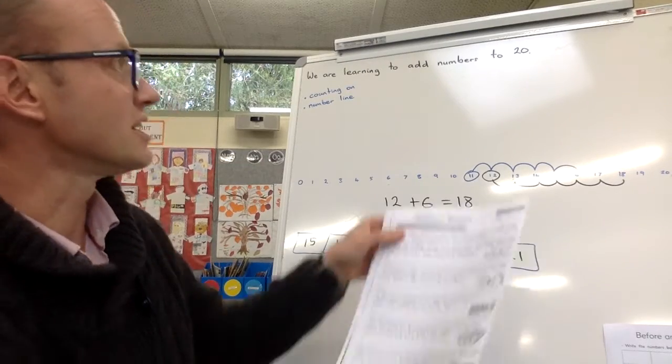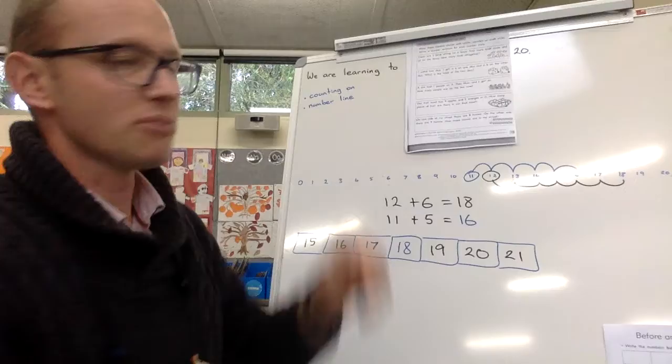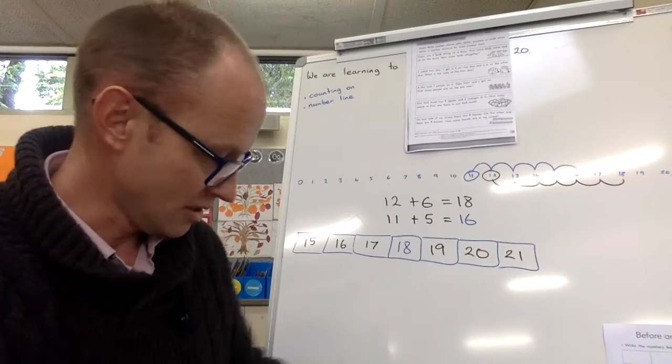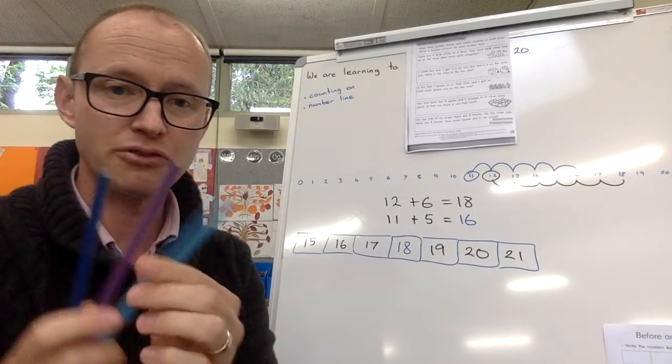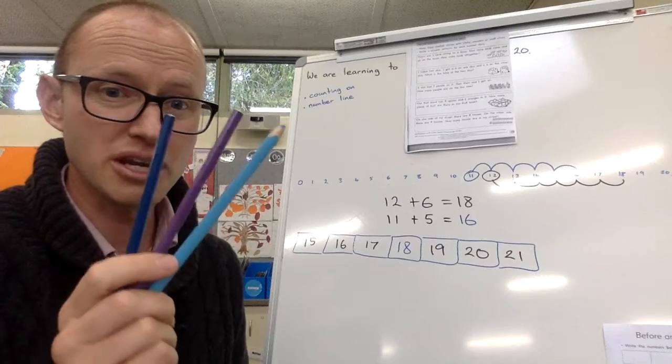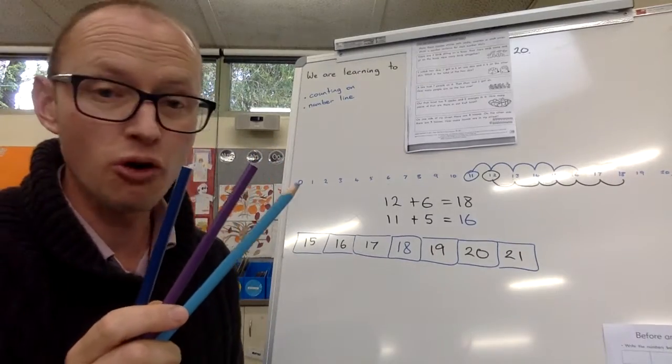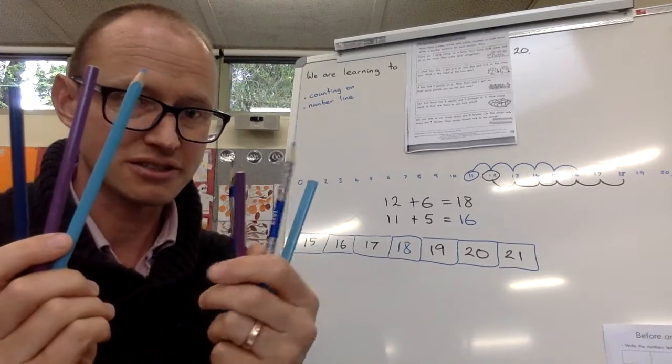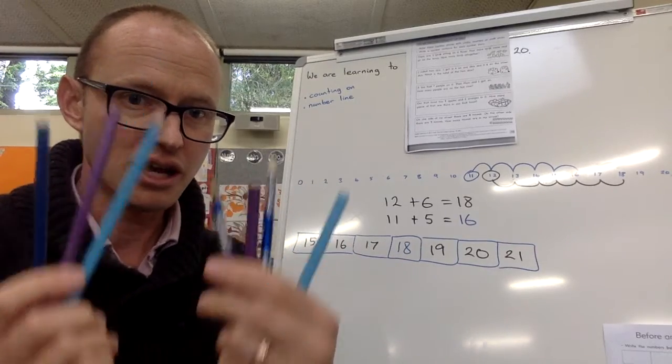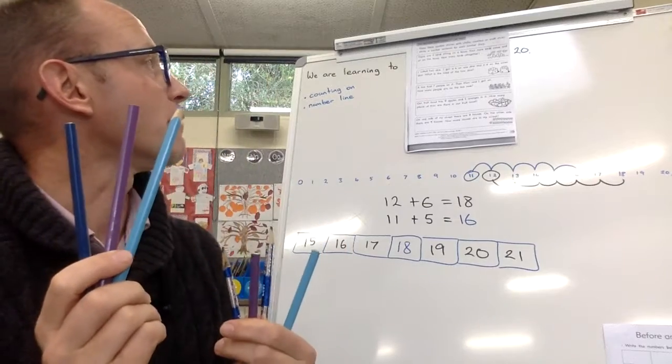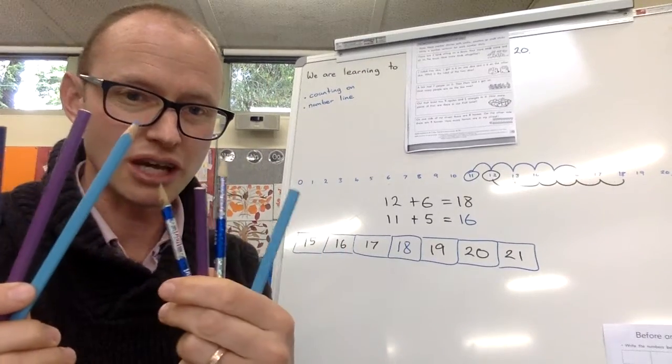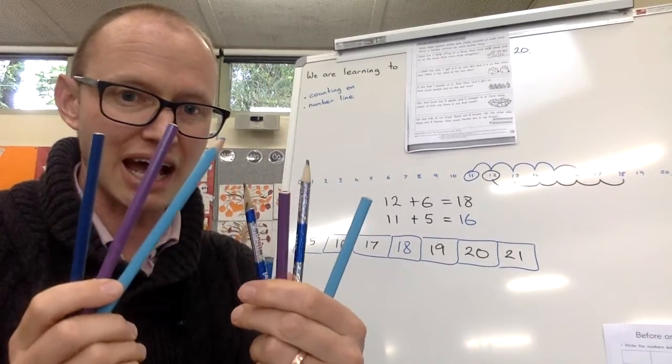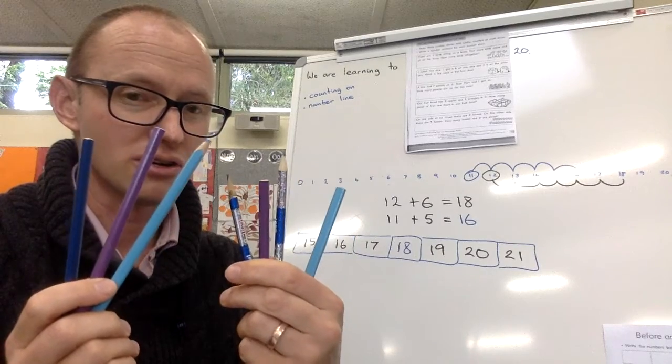There are three birds sitting on a fence. So I'm going to use my sticks. I've got my three sticks. Three birds sitting on a fence. Next one. Four more birds come along. So you get four more sticks. There we go. Three and four. How many birds all together? That's it. So I just need to add up how many sticks I've got. Good.